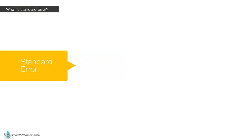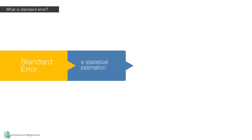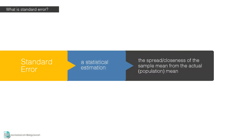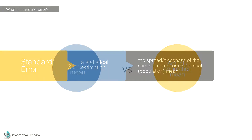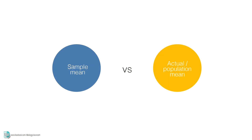Standard error is the statistical estimation of the spread or closeness of the sample mean from the actual or population mean. Before we go further, let me explain what does it mean by the sample mean and the actual or population mean.